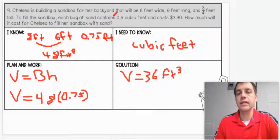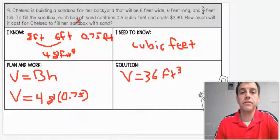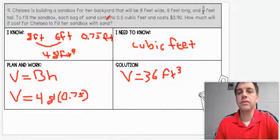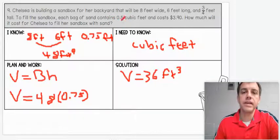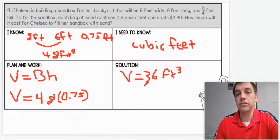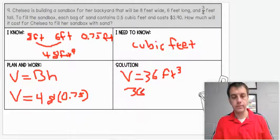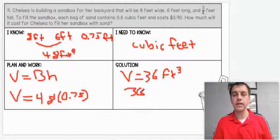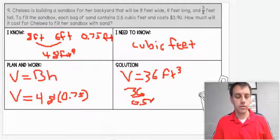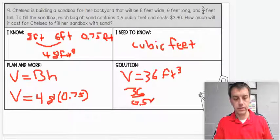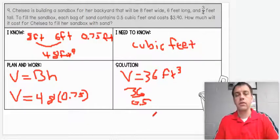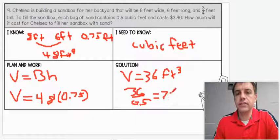We want to know if each bag of sand contains 0.5 cubic feet, how much will it cost for Chelsea to fill her sandbox? We know it's going to be a total of 36 cubic feet to fill the sandbox. How do we figure out how many bags of sand we're going to need? If every bag weighs half a cubic foot, what am I doing to find my solution? Hopefully, what you said was we're dividing. Let's go ahead and divide. So 36 divided by 0.5. What we're going to get is we need 72 bags total.